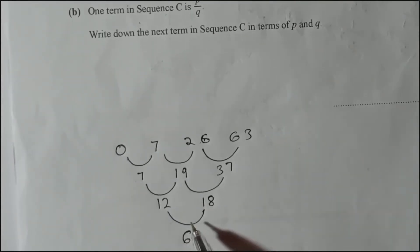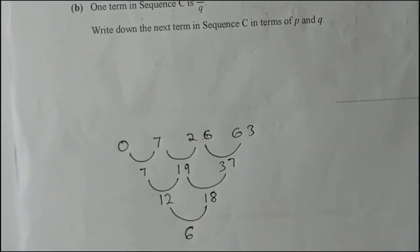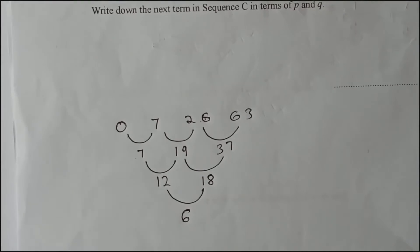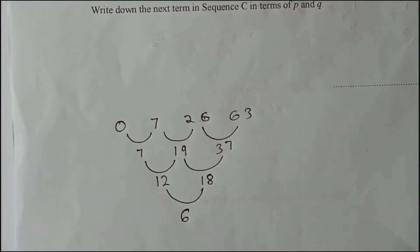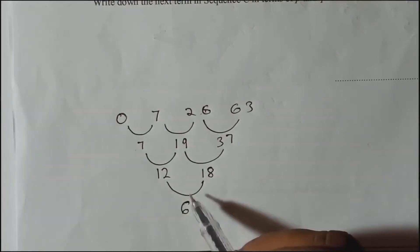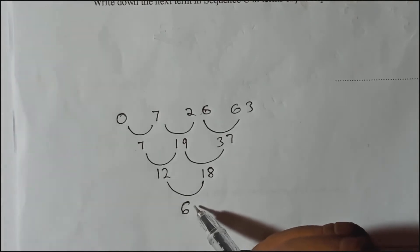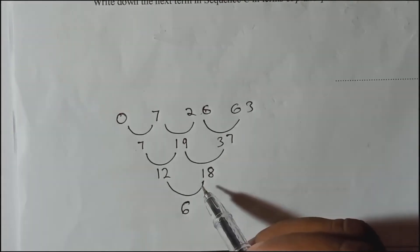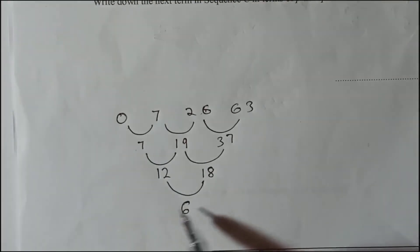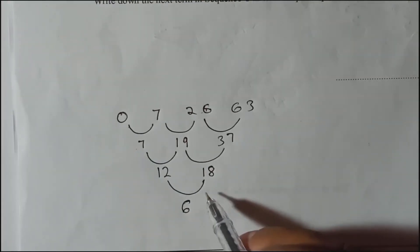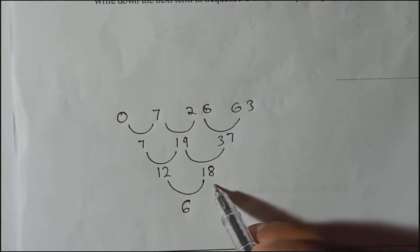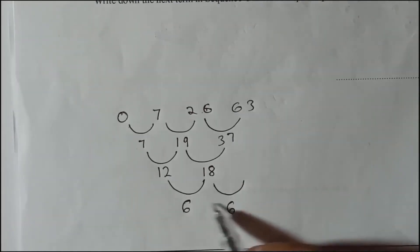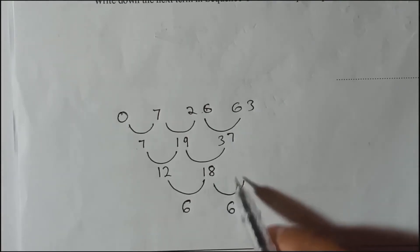We take the difference again — the third difference: 18 minus 12 is 6. Now, normally at IGCSE level we deal with quadratic and cubic sequences. Since we needed three levels of differences before getting a constant, this is a cubic sequence. The third difference is constant at 6.